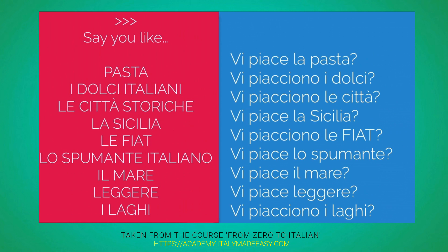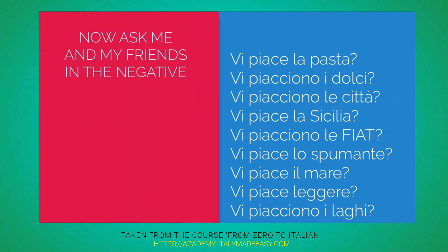We're not done yet. It's the longest and most excruciatingly painful practice, but it is essential. I want to make sure this is coming as naturally as possible. So now we're going with asking me and my friend in the negative: don't you guys like pasta? Don't you guys like sweets? We're simply putting non before the sentences that you just said. Non vi piace la pasta? Don't you guys like pasta? Non vi piace la pasta?